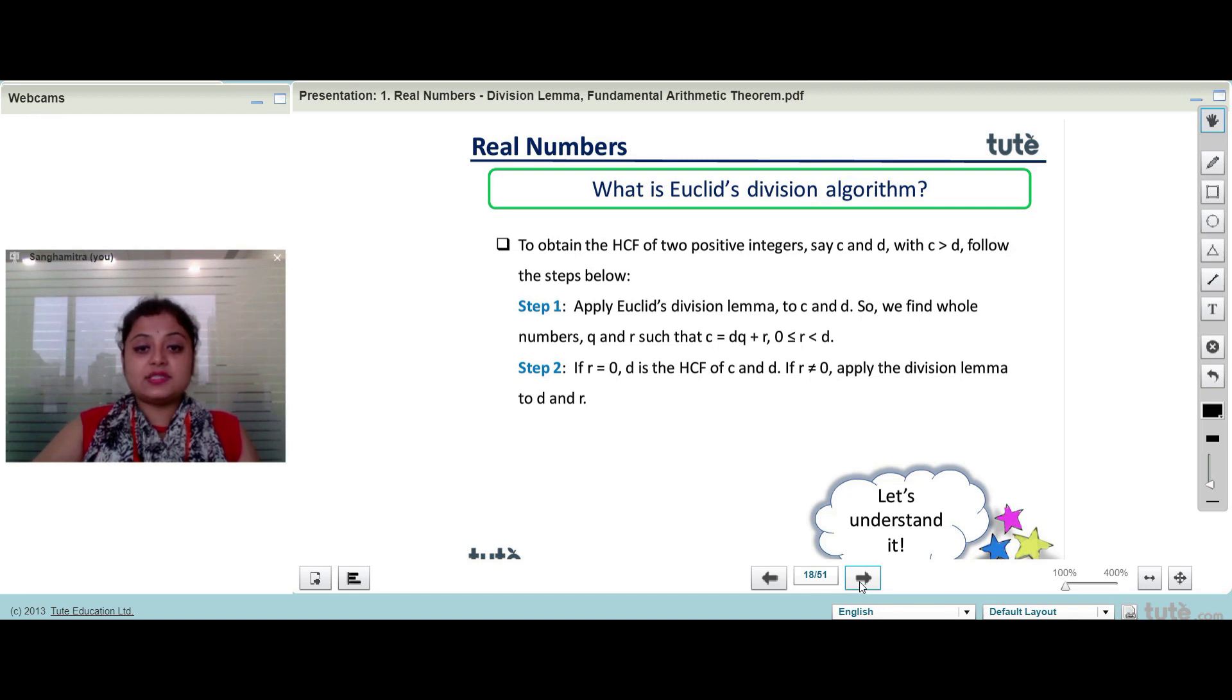Step 2: If R is 0, D is the HCF of C and D. If R is not equal to 0, apply the division lemma to D and R.